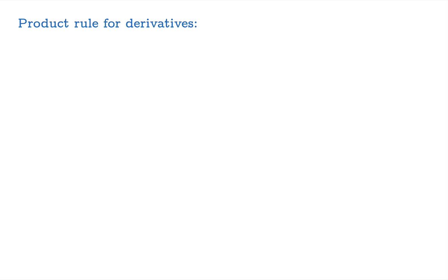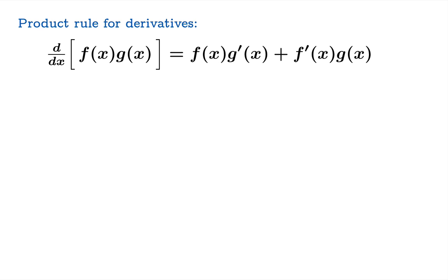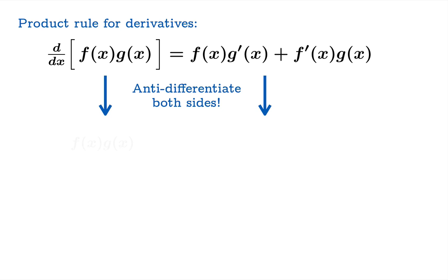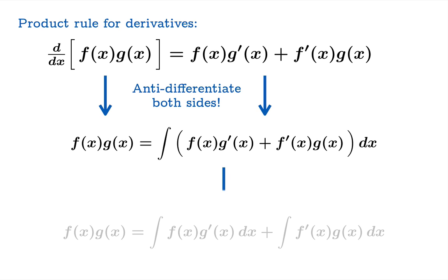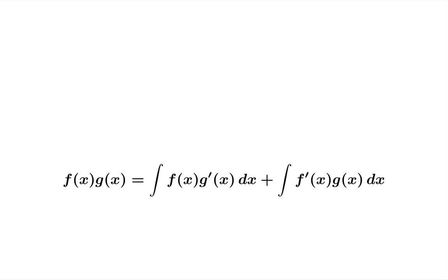How are we going to figure out a product rule for anti-derivatives? What we should really do is look at the product rule for derivatives. Here it is: the derivative of fg is fg′ plus f′g. Now we're going to immediately take the anti-derivative of both sides. If you take the derivative and then find the anti-derivative, you come right back where you started. On the right side we just slap an integral sign around the whole thing, and we can rewrite it using the fact that the integral of a sum is the sum of the integrals.